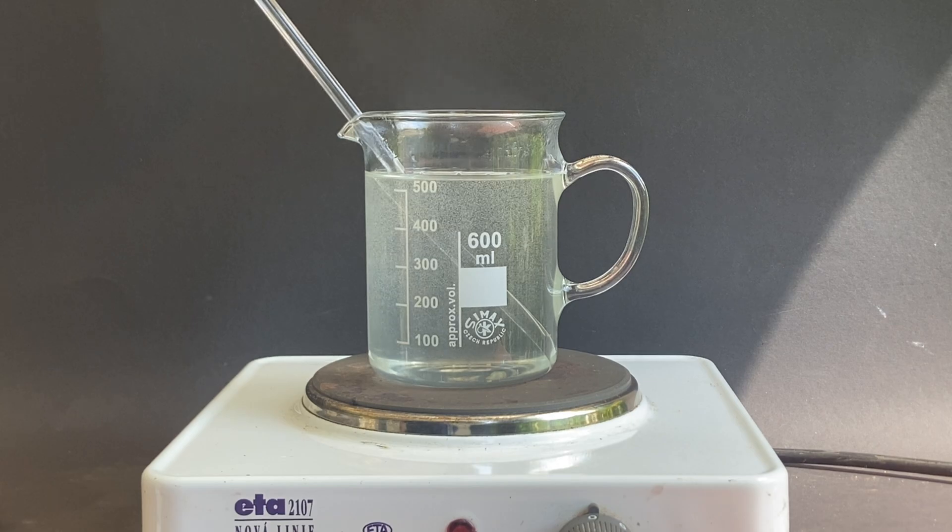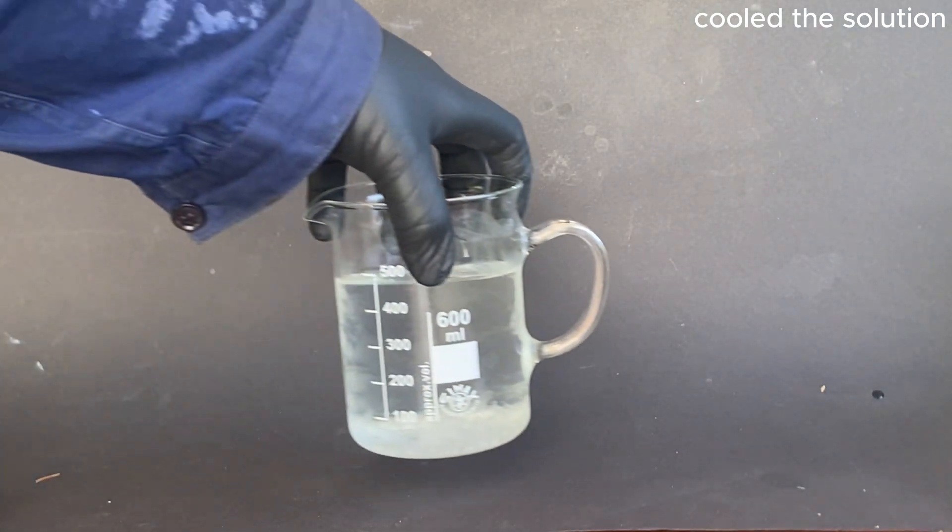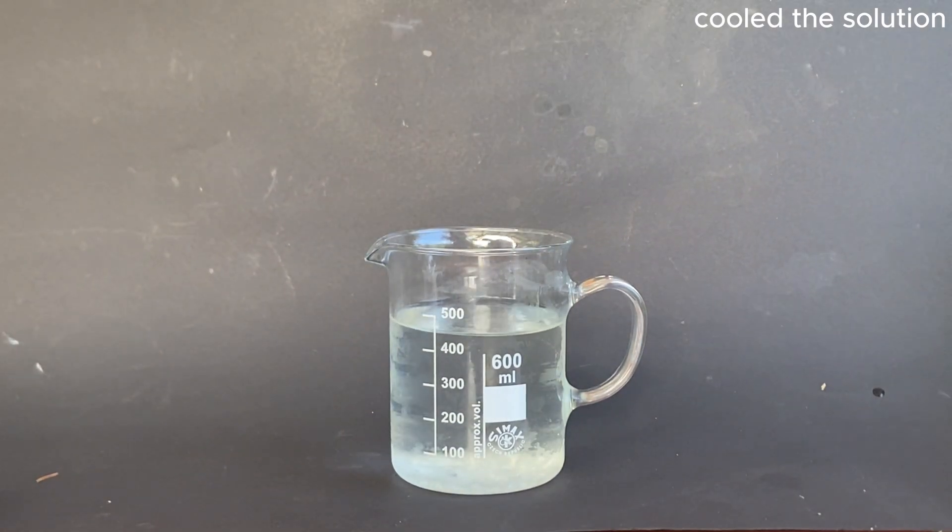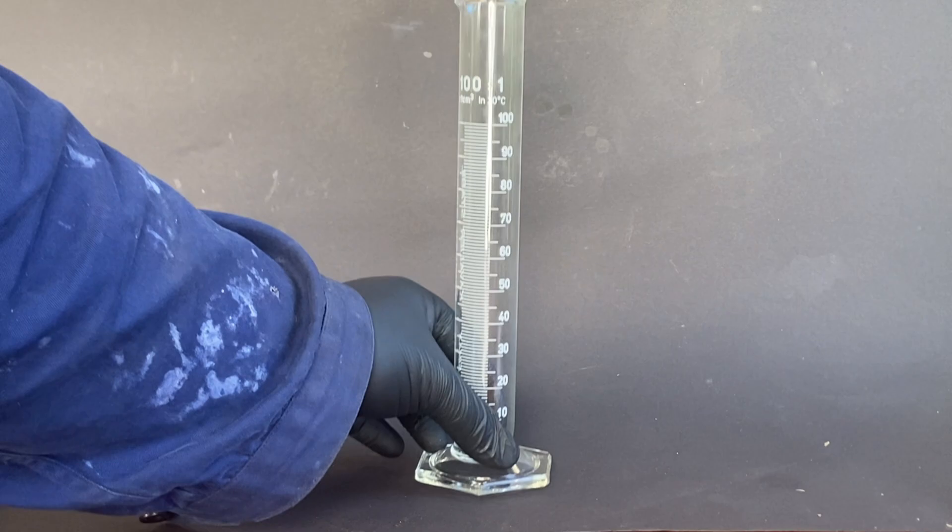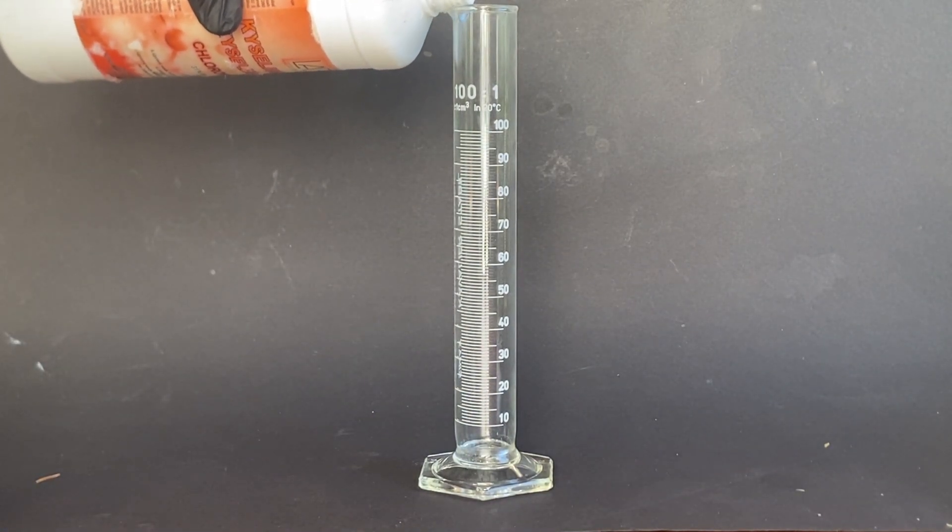in theory, if we cool the solution, the boric acid should crystallize out. However, after cooling, there were just a few small crystals present. So I did the math and found out that I need to add another 25 ml of hydrochloric acid.